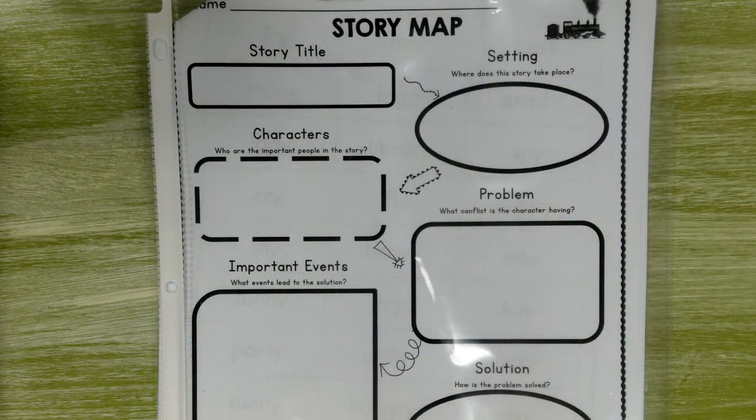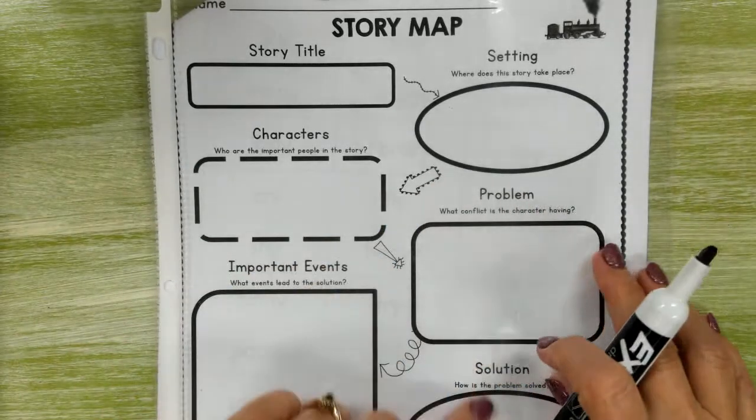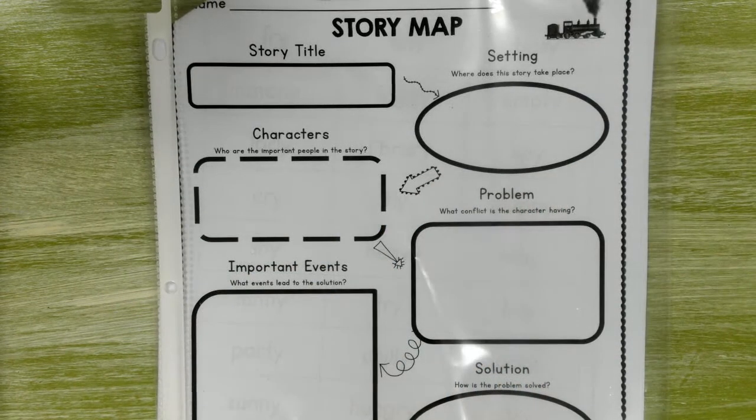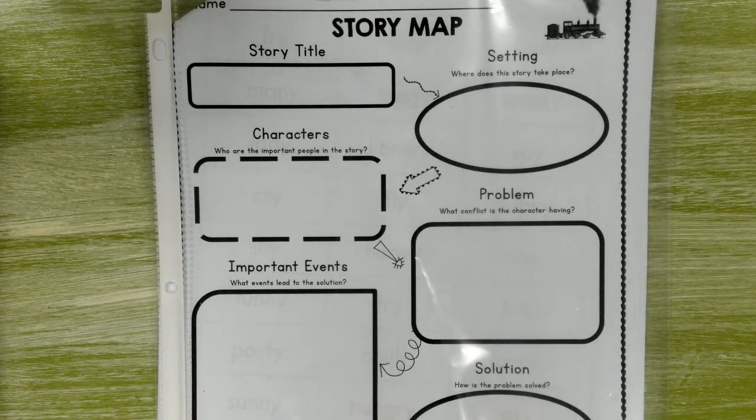Now the setting says where does the story take place. When it says where does the story take place, it means where is most of the time in the book spent. Is it at someone's house? Is it out in nature? Where is it?